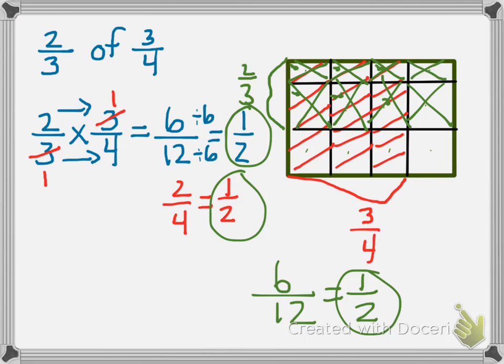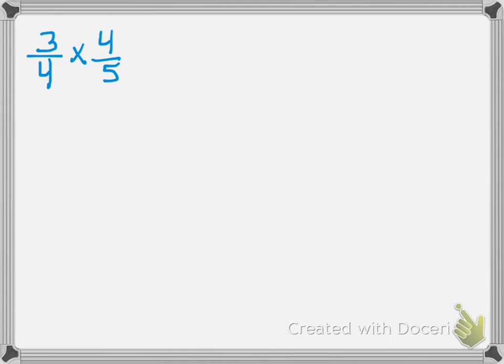Let's try another one. This equation reads 3 fourths times 4 fifths. Let's solve it in three different ways. Cross multiply, cross simplify, and with a model. So if we multiply across, 3 times 4 is 12, and 4 times 5 is 20. Can I reduce that?